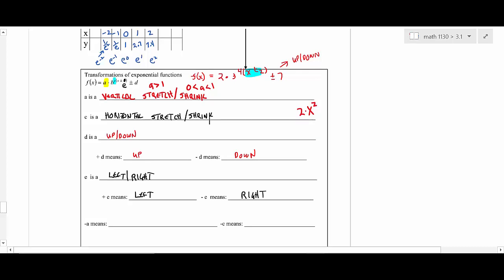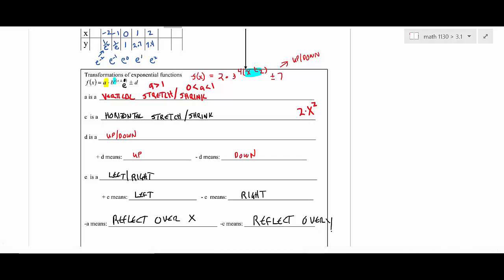If a is negative, the graph reflects over the x-axis because y values go opposite. If c is negative — like 2^(-x) — the graph reflects over the y-axis because x values go opposite. Understanding functions well before calculus matters, since you study functions in depth there.